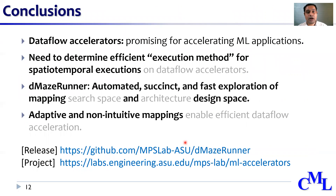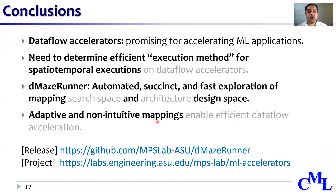In conclusion, dataflow accelerators are promising for energy efficient execution of machine learning networks, but it is crucial to find efficient execution methods for mapping this execution in space and time on these accelerators. The MazeRunner framework provides automated and quick exploration of the mapping space for performance-critical primitives like convolution and matrix multiplication, and also helps in exploring efficient hardware designs for these networks. It creates efficient mappings adaptive to varying sizes of tensors and layer dimensions. Please see the links to our GitHub repository and project page for additional information. Thank you very much for watching.